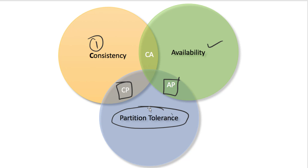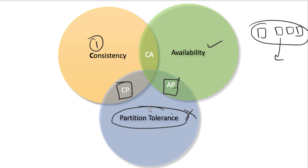So you choose either CP — Consistency plus Partition/network failure — or AP — Availability plus network failure. What about CA? CA is generally less important. If there is no network failure and no partition, you can make your system both consistent and available — update all nodes and then make the system available. It takes time because you update all nodes first, but it is possible.